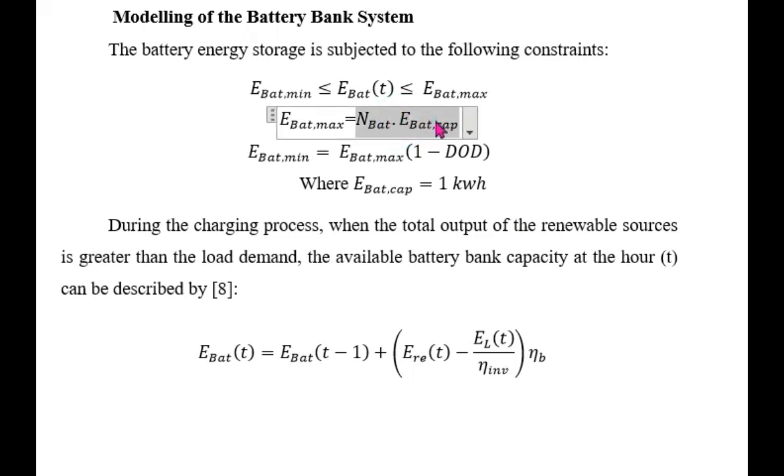E battery capacity is single battery capacity, what is the energy storage capacity of a single battery? In our case, this is one kilowatt hour. Minimum battery energy will be one minus depth of discharge. DoD is depth of discharge, the minimum allowable capacity that battery can be discharged.